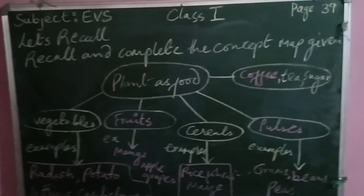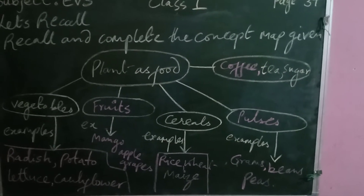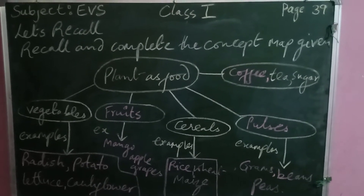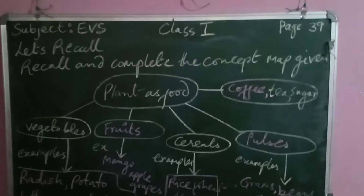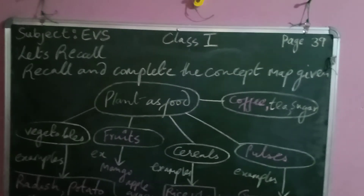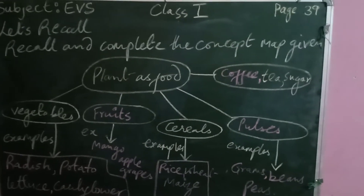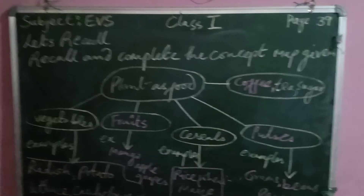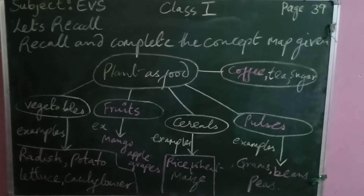For vegetables, write: radish, potato, lettuce, and cauliflower as examples. In the fruit part, examples are already given. For cereals, write: rice, wheat, and maize. For pulses, examples like gram, beans, and peas are already given — just write pulses in the blank. For the last blank, write coffee, as tea and sugar are already given.